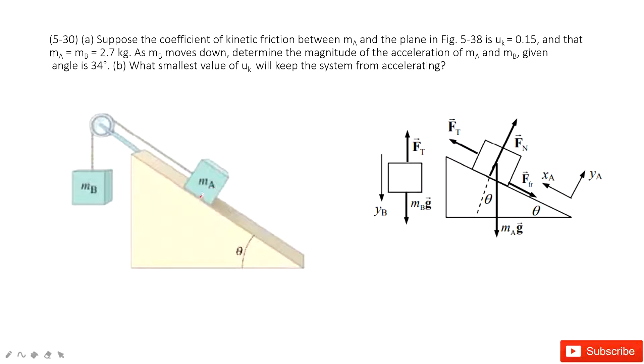First, we need to solve the problem. The problem tells us to assume the system moves this way: A moves up, B moves down. So we can see,